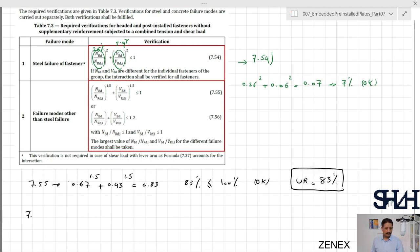Or you can go with 7.56: 0.67 plus 0.43 equals 1.1 and it should be less than 1.2, or we can say that utilization ratio is 92 percent. Here you can see it's more conservative with the linear interaction.